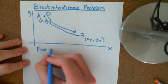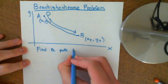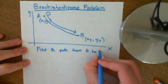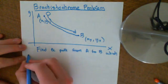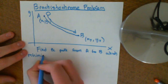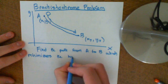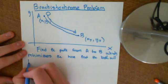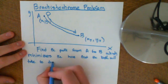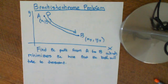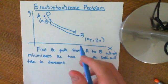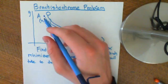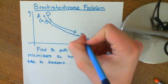And the problem is to find the path from A to B which minimizes the time that the ball will take to descend. Of course, we're going to assume that our slide is extremely smooth, so we'll ignore problems of friction. What is the path that will give us the quickest time of descent from A to B?